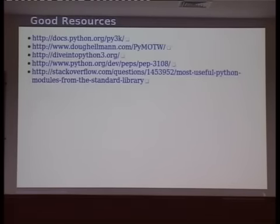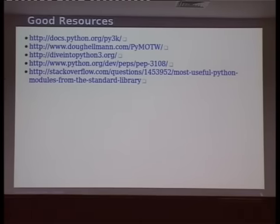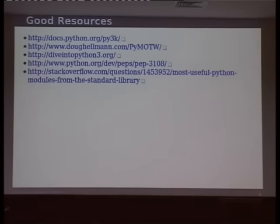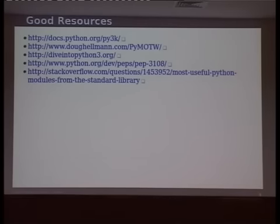I have about five minutes left. There are good resources for this: the Py3K documentation, Python Module of the Week, Dive Into Python 3, PEP 3108 for standard library reorganization, and good Stack Overflow questions like 'most useful Python modules from the standard library.' Someone did statistics from PyPI on how many modules from the standard library are used by other packages — the OS module was most commonly used, then logging, then urllib2. CGI HTTP servers are rarely used — only about eight times out of all packages on the PyPI index.